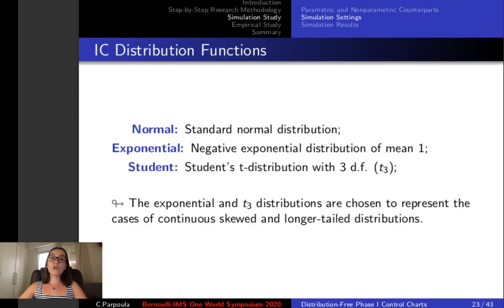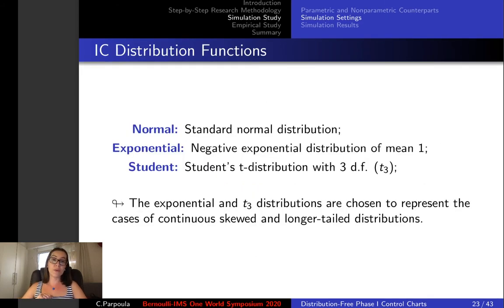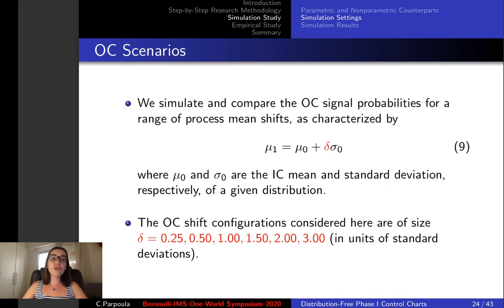We considered three different in-control distribution functions: a standard normal distribution, a negative exponential distribution of mean 1, and a student distribution with 3 degrees of freedom. As for the out-of-control scenarios, we simulated and compared a range of process mean shifts as described in relation 9 where delta varies from 0.5 to 3 in units of standard deviation.